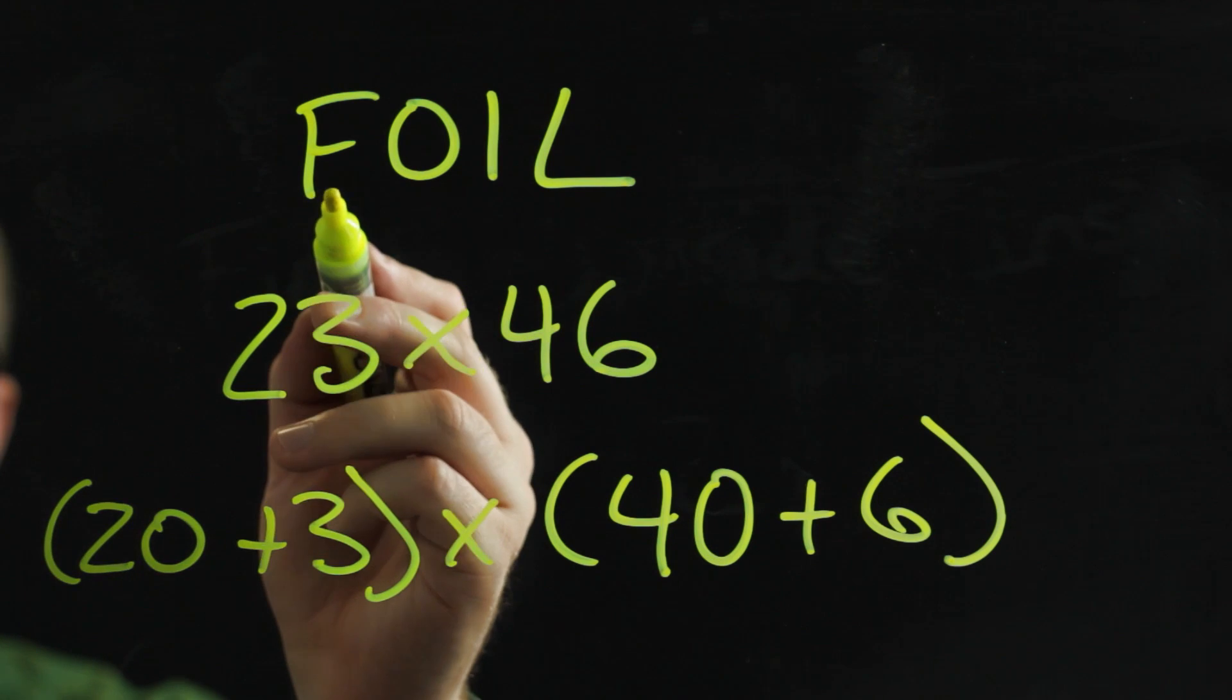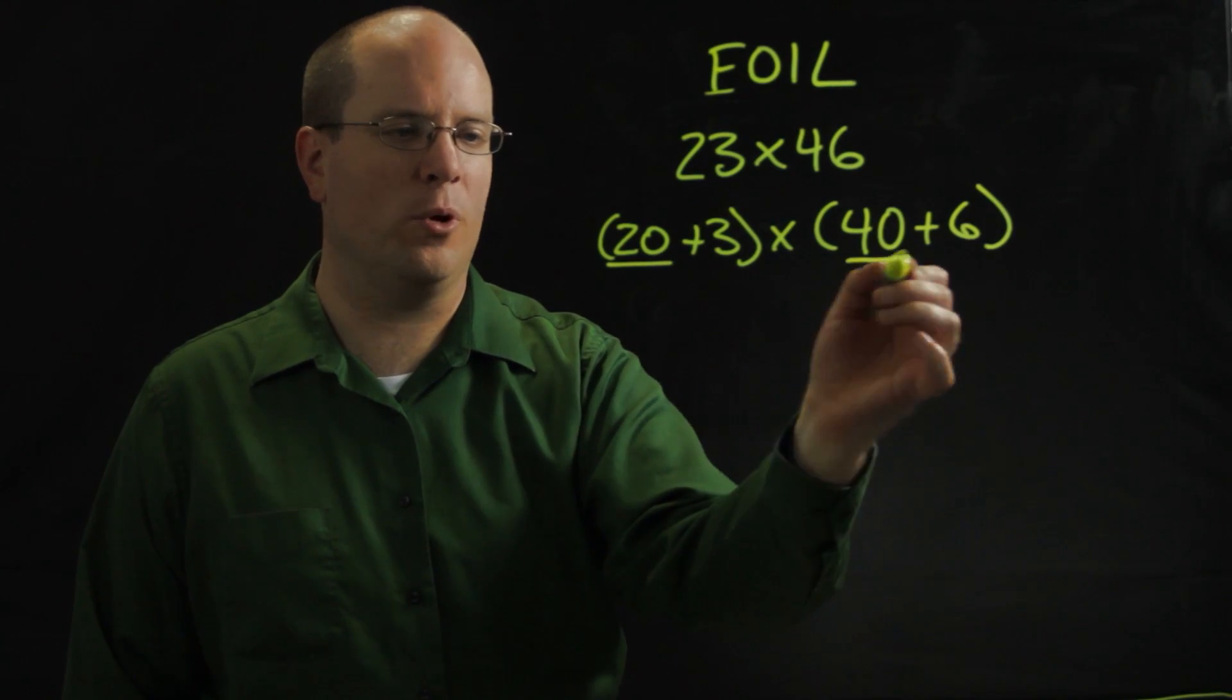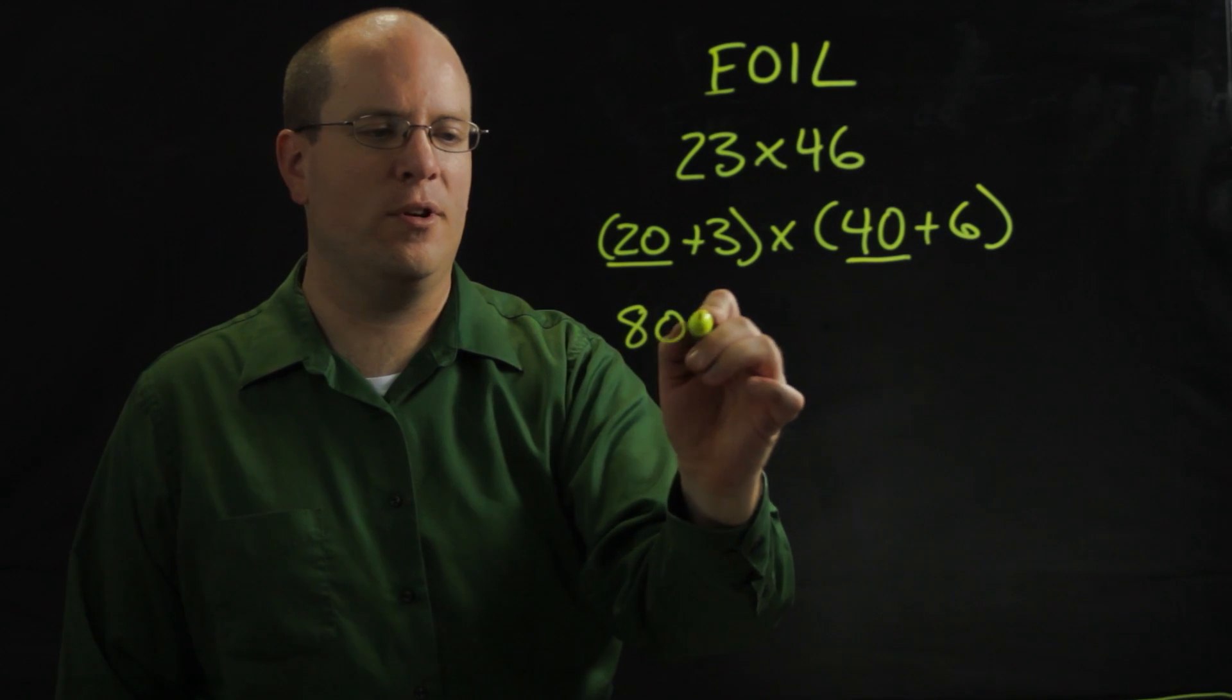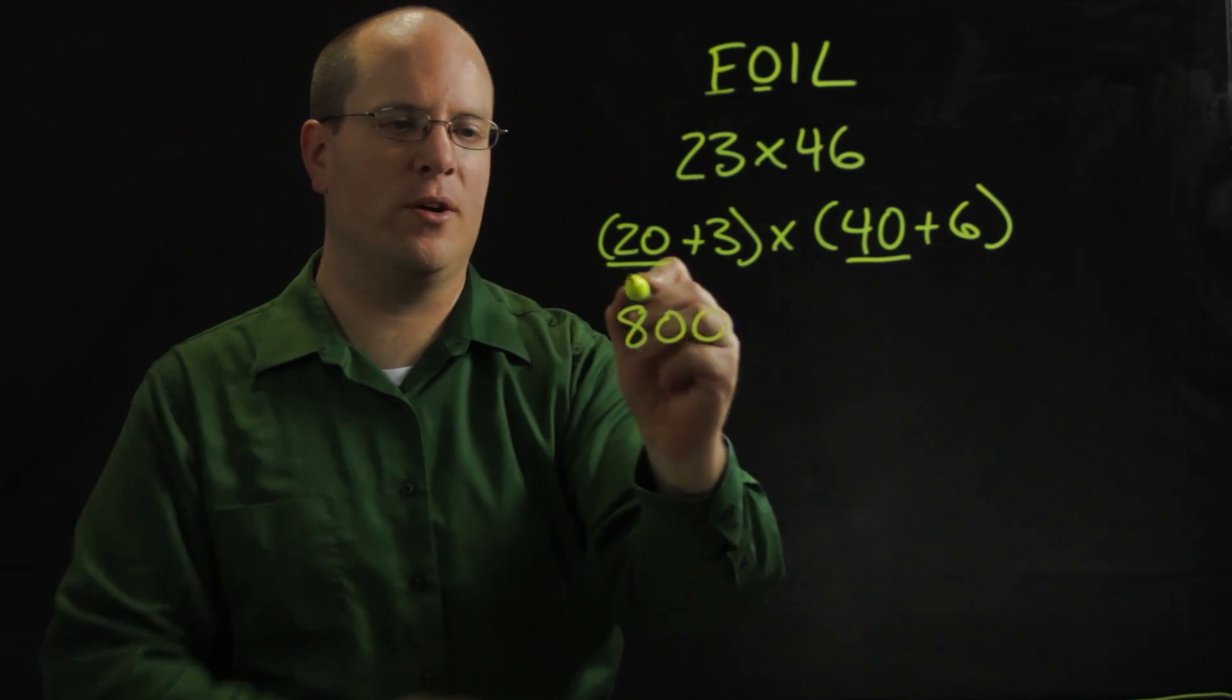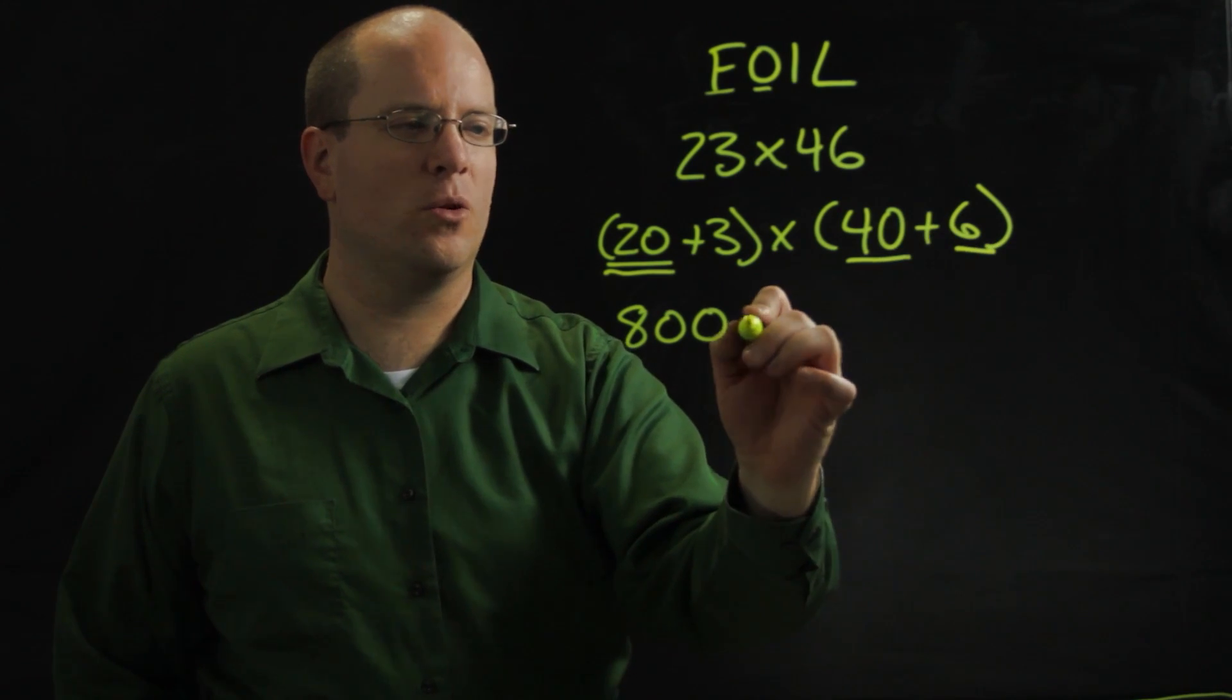And then I'm going to multiply the first numbers. 20 times 40 is 800. The outside numbers, that means these two out here, 20 times 6, which is 120.